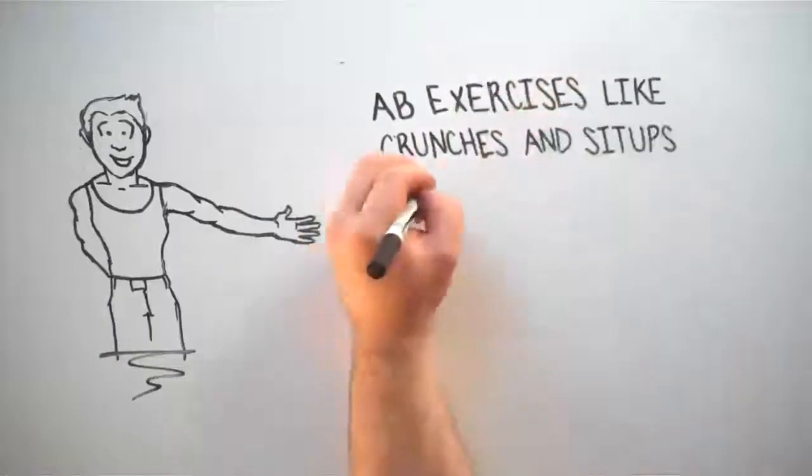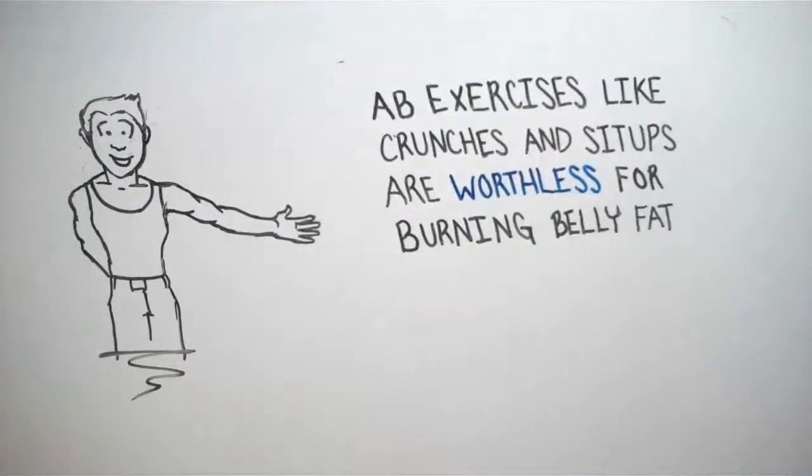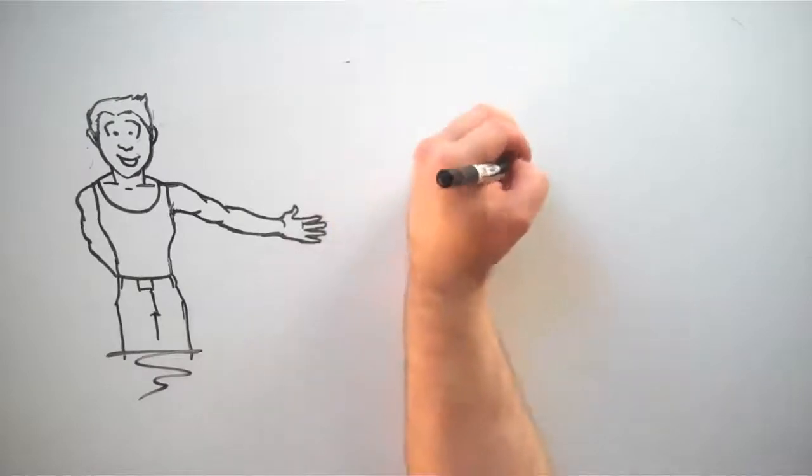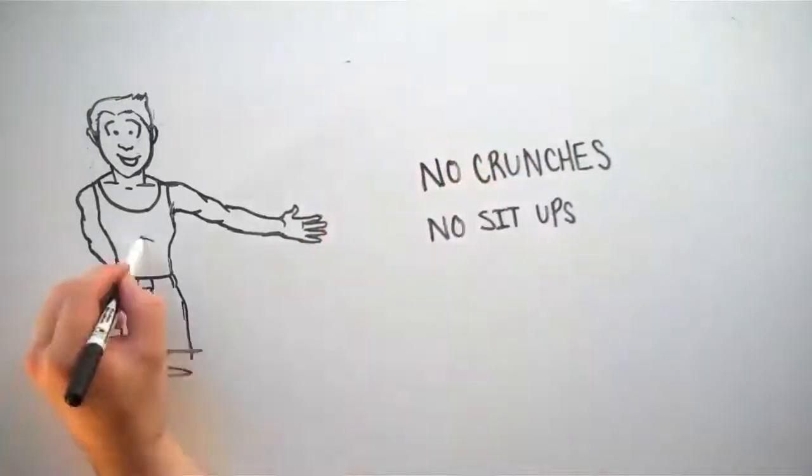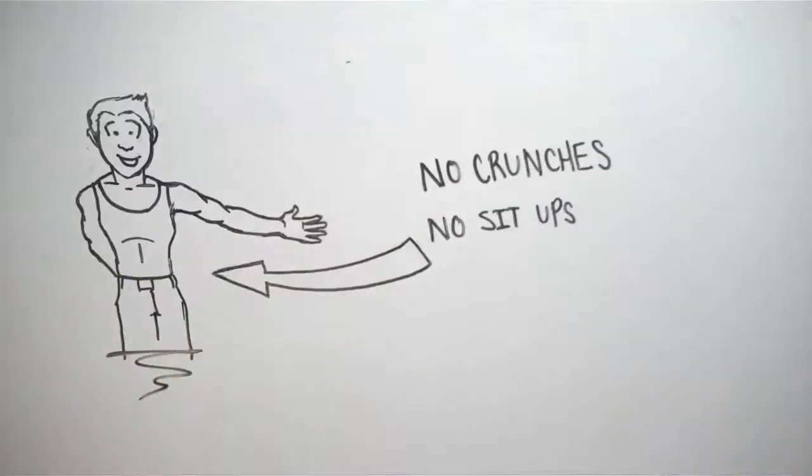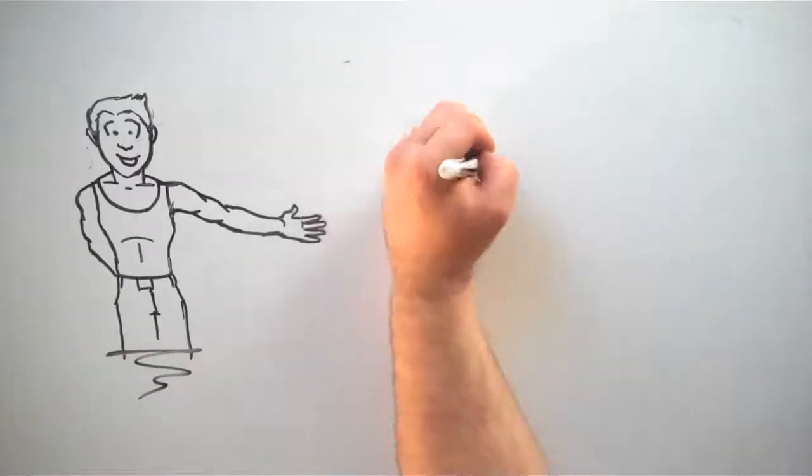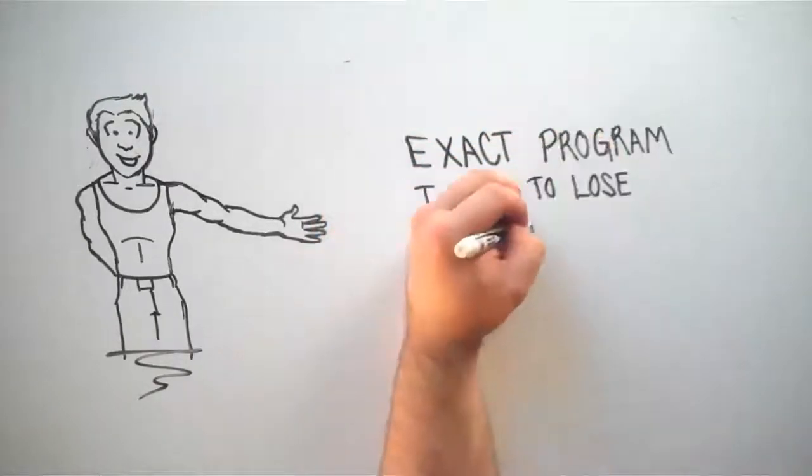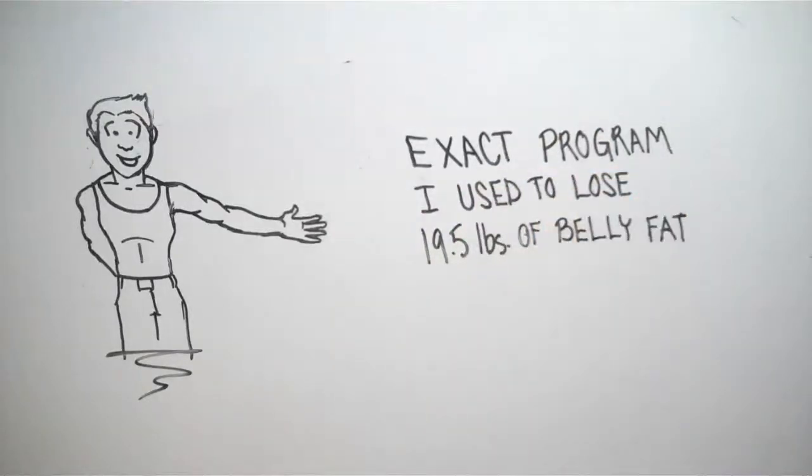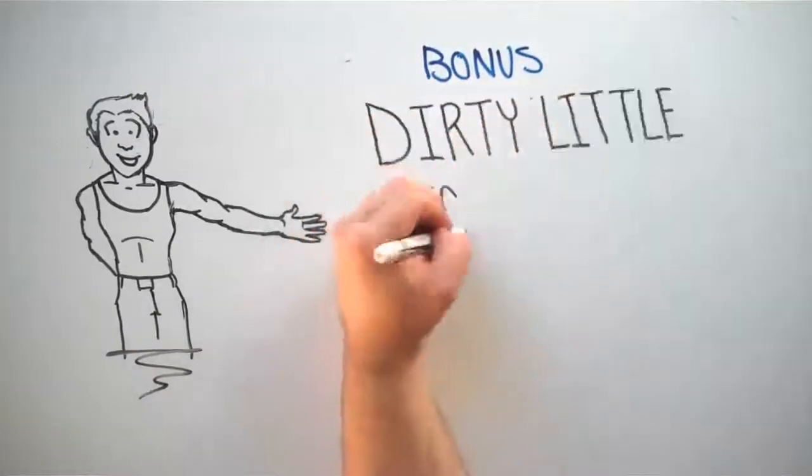Dirty little secret number three. Ab exercises like crunches and sit-ups are worthless for burning belly fat. Being someone who used to crank out hundreds of crunches and sit-ups at the end of my workout, this was a tough lesson for me to learn. However, the first time I ever got a lean and toned stomach, I actually did not do one single crunch or sit-up in any workout leading up to that. Not one. You see, the key to losing belly fat isn't endless crunches or sit-ups. It all comes down to working smarter and not harder. And in a minute, I'll reveal to you the exact program I used to lose 19.5 pounds of belly fat.